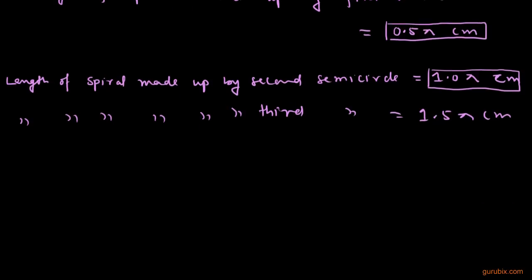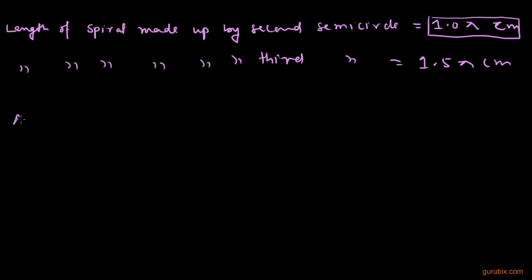So now we have our AP and AP is as follows: 0.5π, 1π, 1.5π, and it is up to 13 semicircles. Therefore, we have our first term equals to 0.5π.